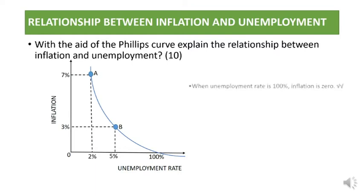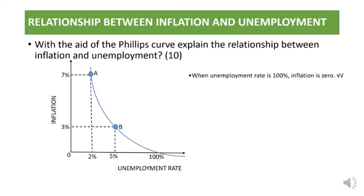The first point you should mention after drawing the Phillips Curve is: when the unemployment rate is 100 percent, inflation is zero. This earns you marks. When there is no one working, there is no inflation at all.